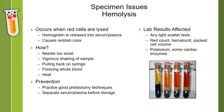One of the most common specimen issues we see in the lab is hemolysis. Hemolysis occurs when red blood cells are lysed, the hemoglobin gets released, and the serum or plasma turns a reddish color. You can see in the image the varying degrees of hemolysis, with the number one tube being little to no hemolysis, and the number four tube being grossly hemolyzed.